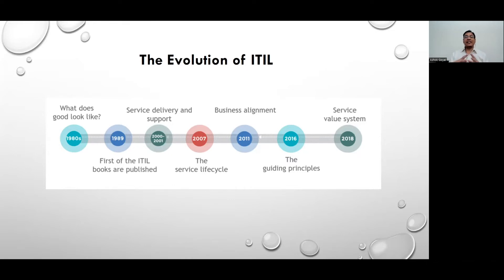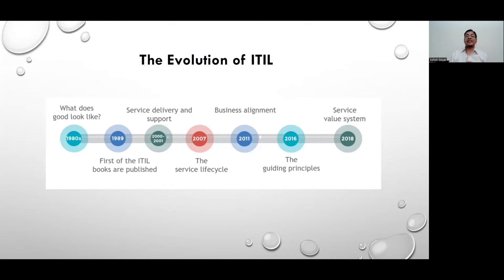In 2017 or 2018, the next version came up — that's what we are studying right now, ITIL version 4. The framework became popular as the service value system. The service value system is an overall framework that makes it necessary to understand that service value could be provided in a certain context, and we would speak about this model in detail as we move forward.